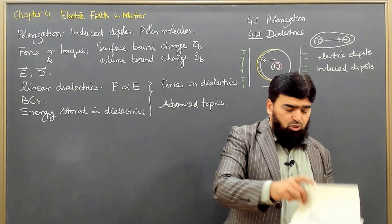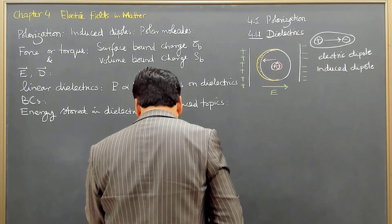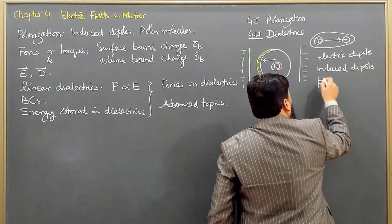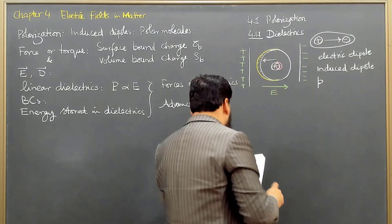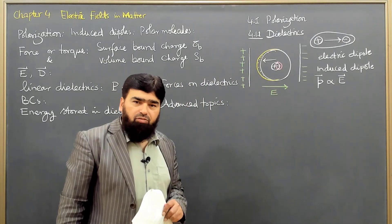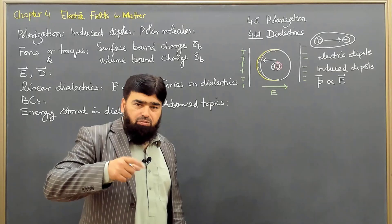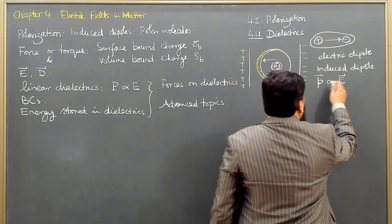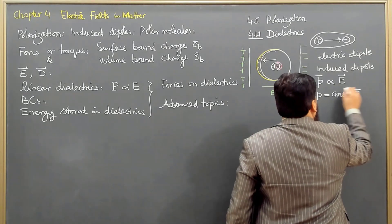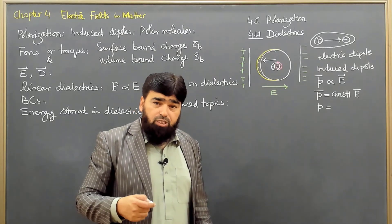The electric field is basically stored in that material and we will find out how electrical energy is stored in that material. The polarization — or the dipole moment, represented by small p — is proportional to the electric field. It's a vector quantity: the more the electric field, the more the dipole moment. The dipole will basically align itself along the direction of the electric field, so p equals a constant times E.